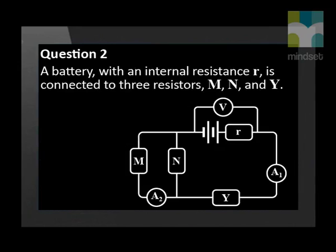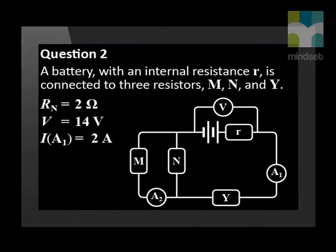A battery with an internal resistance R is connected to three resistors M, N and Y. The resistance of N is 2 ohm and the reading on voltmeter V is 14 volts. The reading on ammeter A1 is 2 amperes and the reading on ammeter A2 is 1 ampere. Ignore the resistance of the ammeters and the connecting wires.